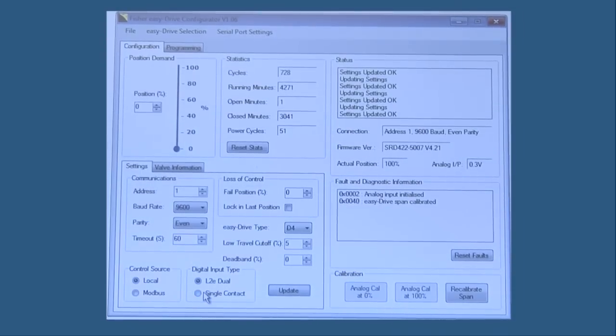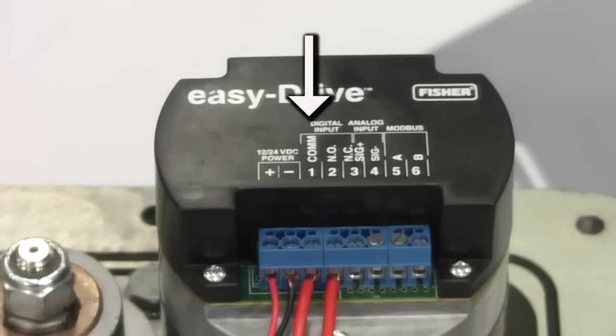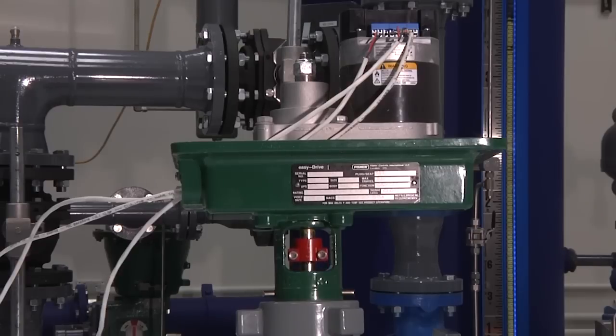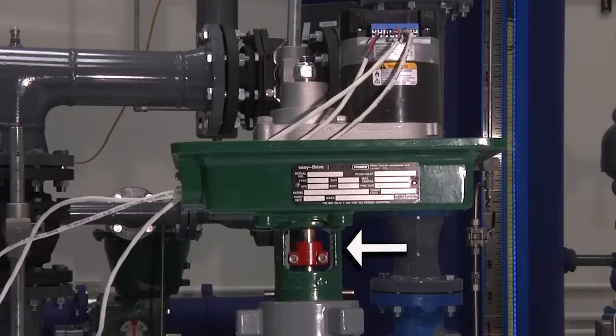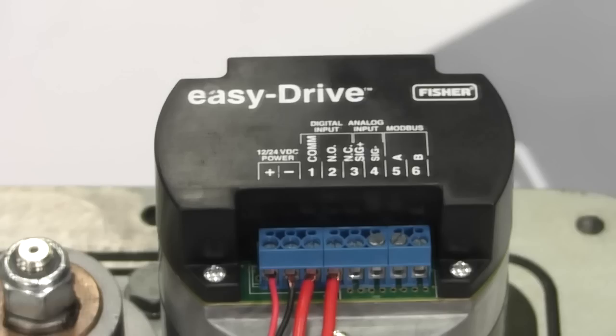For the first on-off mode, single dry contact achieves continuity across terminals one, the common, and two, the normally open. When these are in continuity or the voltage differential between these terminals is zero, the valve should respond by opening. Once the connection between the common and normally open has been broken, the valve should move to the closed position. Using these wires, we are demonstrating a contact closure.